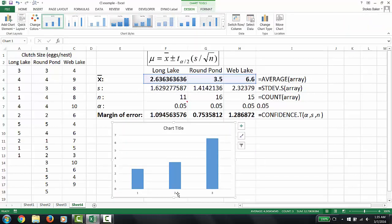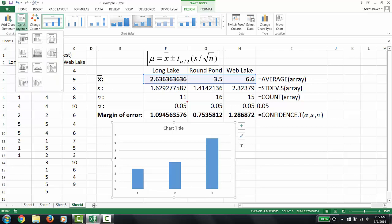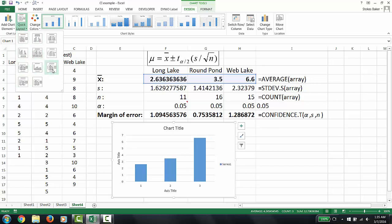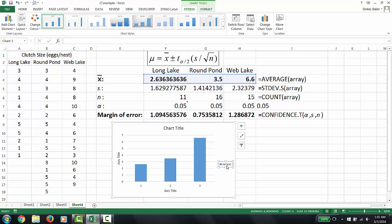To change the bottom x-axis I'm going to use quick layout and I'm going to add layout 9. And then I'm going to delete the legend right here.